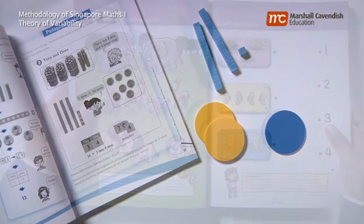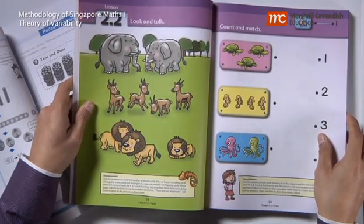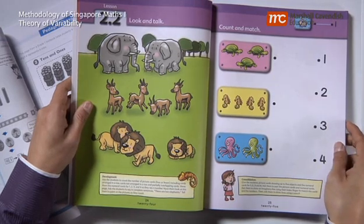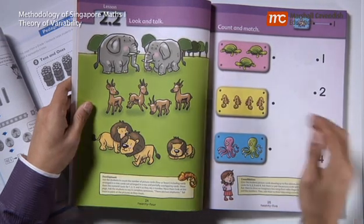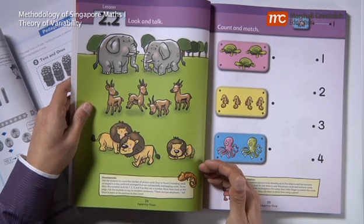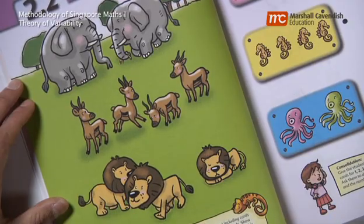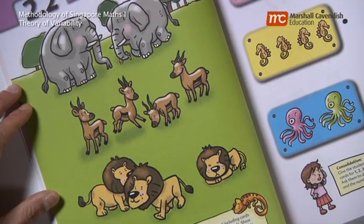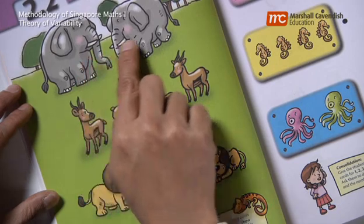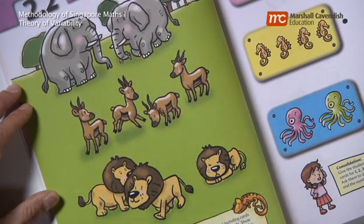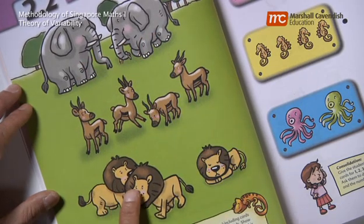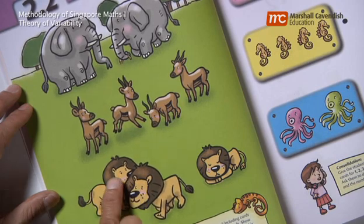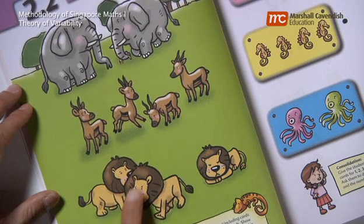Let me show you another example of the application of the theory of variability in the Singapore textbook. This is from the kindergarten textbook, where the students are learning how to count to 4. If you look at the illustration, it is much easier to count the elephants, because they are drawn separately, than to count the lions, because there are some overlapping.